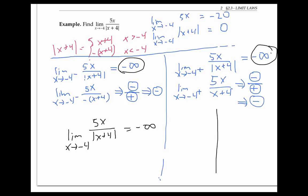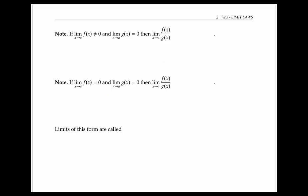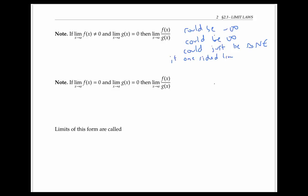We can confirm that by looking at a graph. Near x equals negative four, it looks like a vertical asymptote at x equals negative four, as expected. So we've seen that if the limit of f(x) is not zero and the limit of g(x) is zero, then the limit of the quotient could be negative infinity, as in the last example, or it could be positive infinity, or it could just not exist — if the one-sided limits are positive infinity on one side and negative infinity on the other.